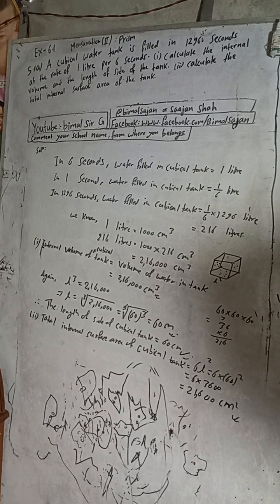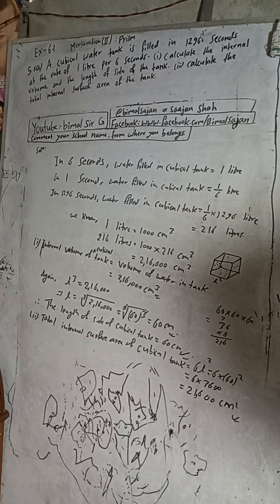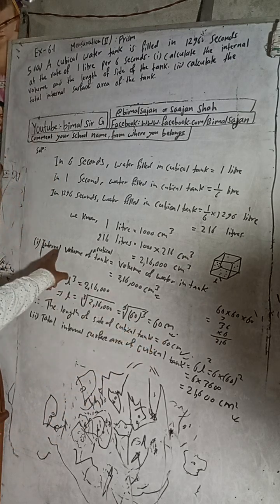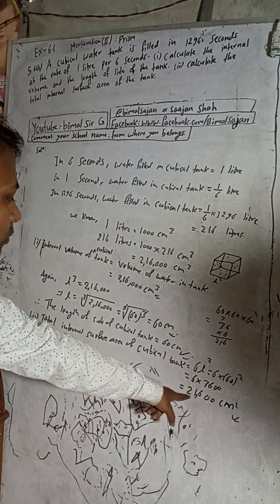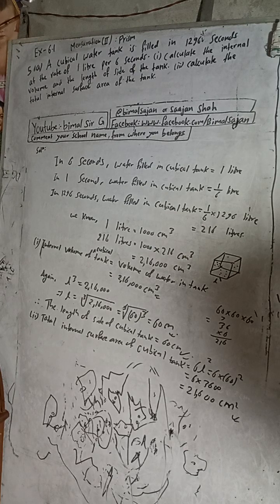Dear students, this is the solution of this question. The internal volume is 216,000 cm³, the length of the side is 60 cm, and the total internal surface area is 21,600 cm². If you find this video useful, please like, comment, and share it.